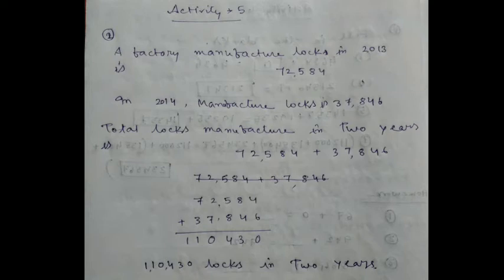7 plus 2, 9, plus 1, 10. 0 here, 1 carried. 7 plus 3, 10, plus 1, 11. So 1 lakh 10,430 locks were manufactured in two years.